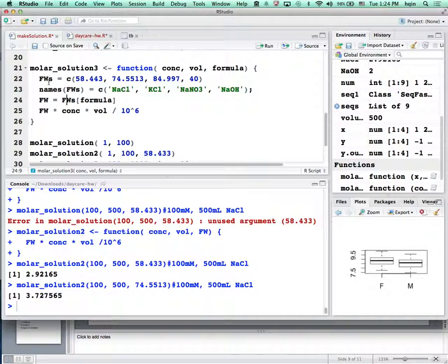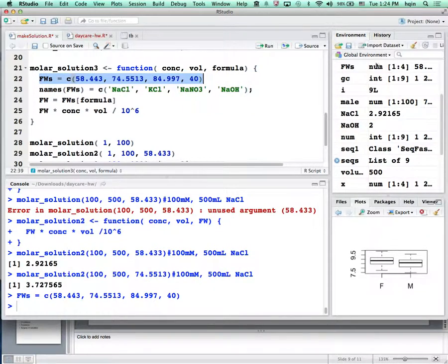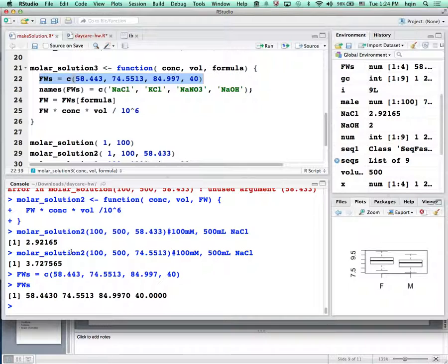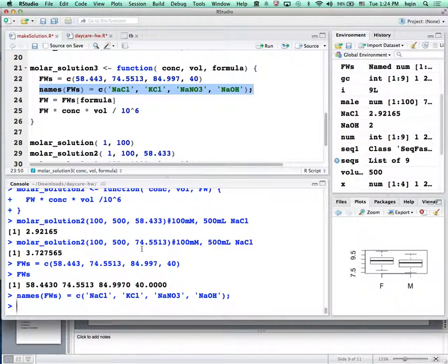The way I do it: I put names into vectors. Here's the formula weight. If I run that code, you see it's basically a vector of numbers—hard to know. But in R you can name those vectors.